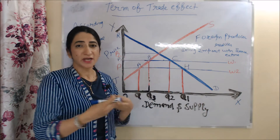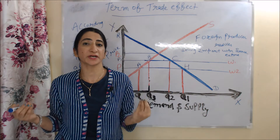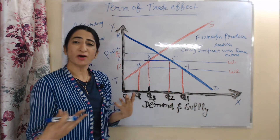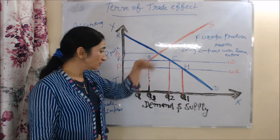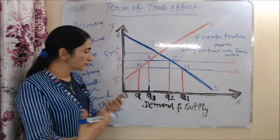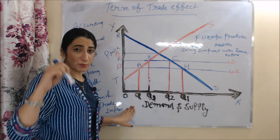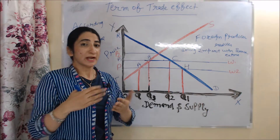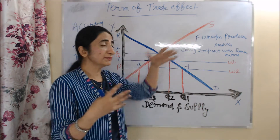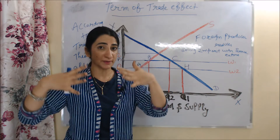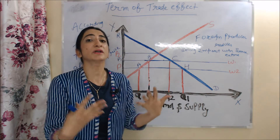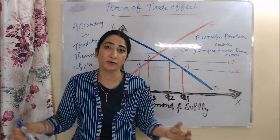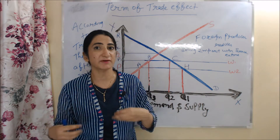We will talk about the terms of trade effect. According to traditional theorists, after imposing tariff our terms of trade improve. Before imposing tariff, our import was QQ1. But after imposing tariff, our import falls — now we have only Q3Q2 quantities of import. If our import falls, it may be possible that foreign producers reduce the price of imports. If import price reduces, we are doing more import with the same export, which means our terms of trade improve.